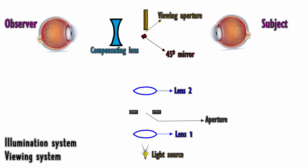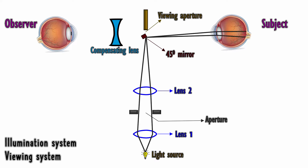Light rays from the lamp are converged slightly by the first lens, pass through the aperture, and are focused by the second lens onto the mirror, which then reflects light into the patient's eye to form an illuminated area on the patient's retina. Some of the reflected rays from here pass out of the patient's eye through the viewing aperture and compensating lens of the ophthalmoscope onto the observer's retina.